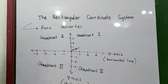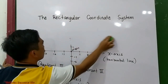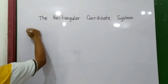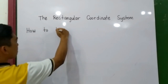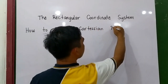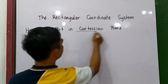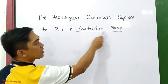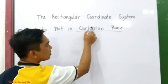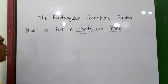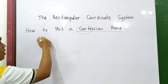How to plot in our coordinate system? I'm going to reset. The rectangular coordinate system is also known as the Cartesian plane. It was named after René Descartes. Okay, how to plot? In order for us to plot, let us first familiarize ourselves with the coordinates.